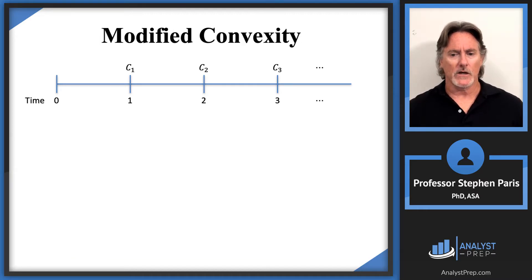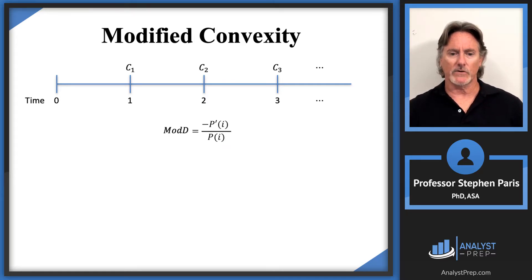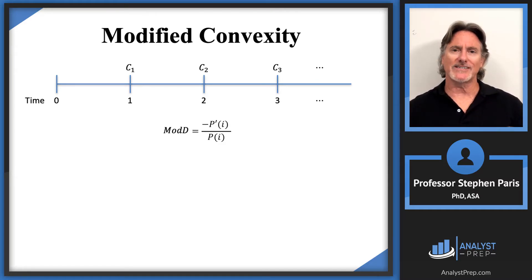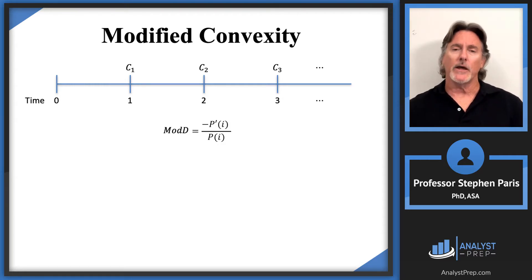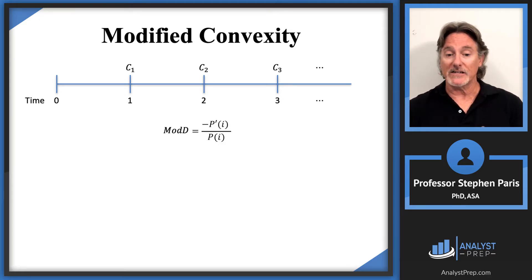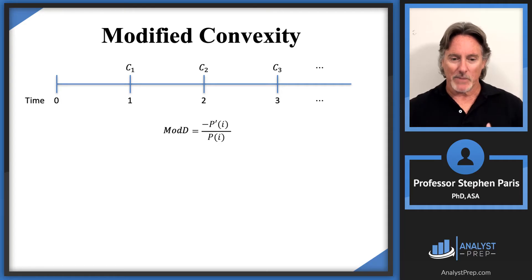Let's move on to modified convexity. To define it, let me remind you of the definition of modified duration: it's the negative of the derivative of the price function (or present value function) as a function of the interest rate, divided by the present value function itself. The present value function is a decreasing function of the interest rate — as the interest rate goes up, the present value of the payments goes down. That's why the negative sign is needed in the numerator: since P is decreasing, P-prime is negative, and the negative in front ensures a positive result.